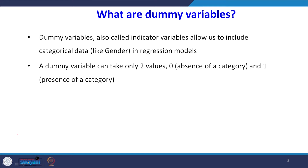The another name for categorical variable is called dummy variable, also called indicator variable. It allows us to include categorical data in regression analysis. For example, gender is one categorical variable where there are only two levels possible: male or female.